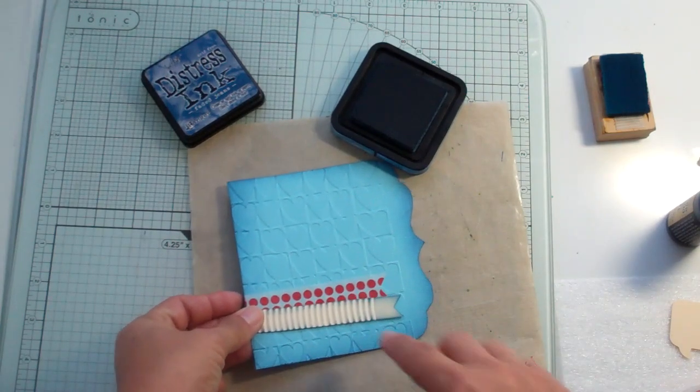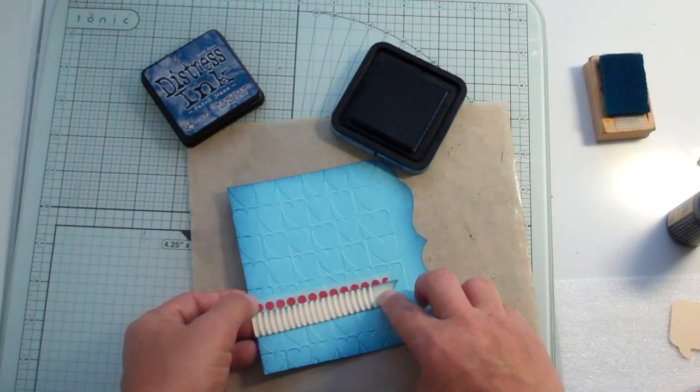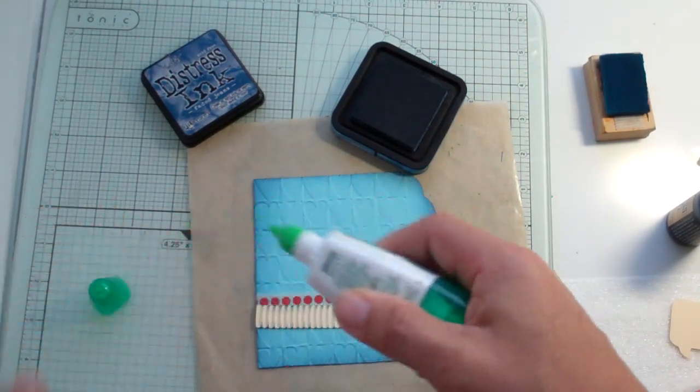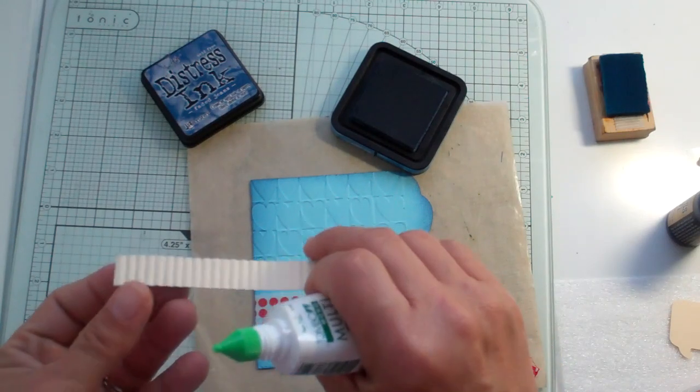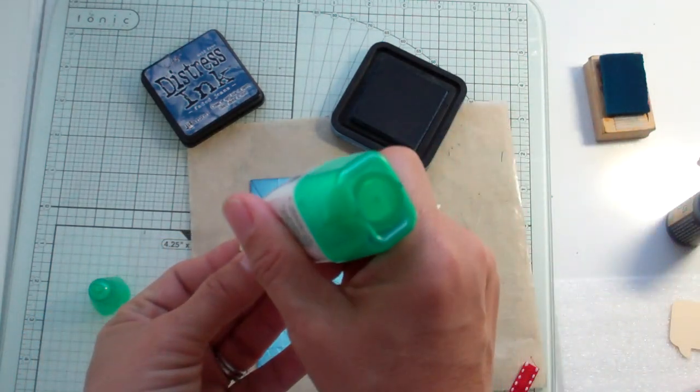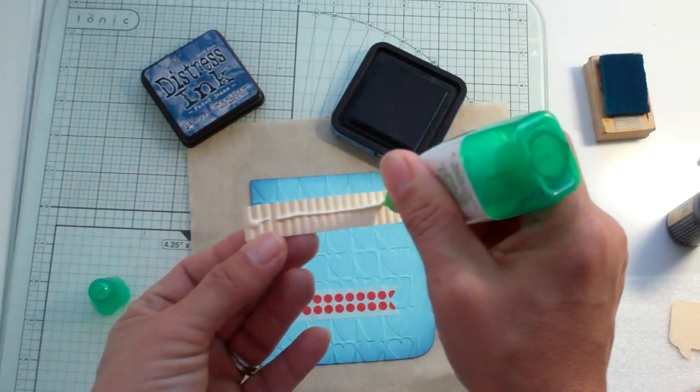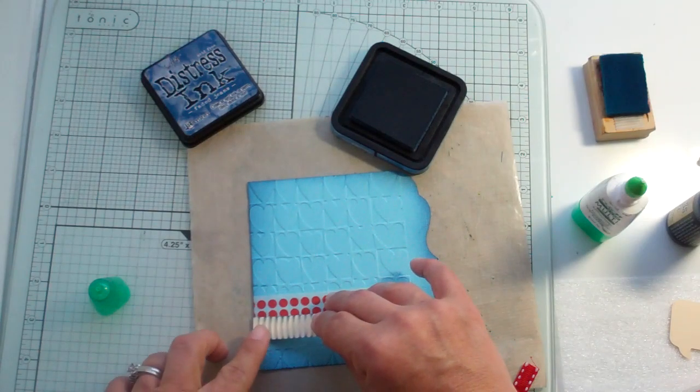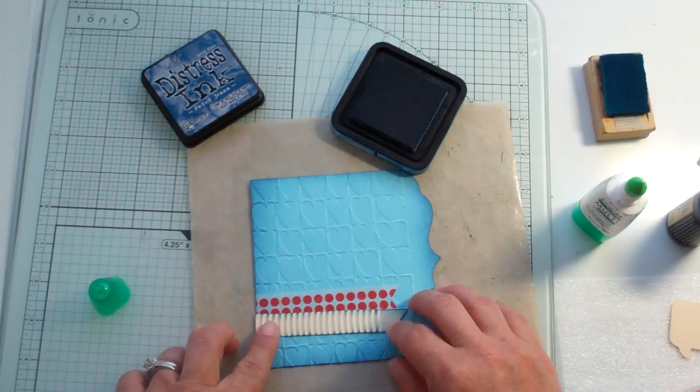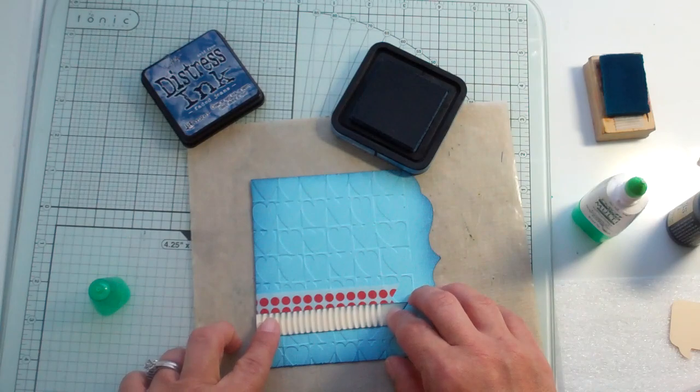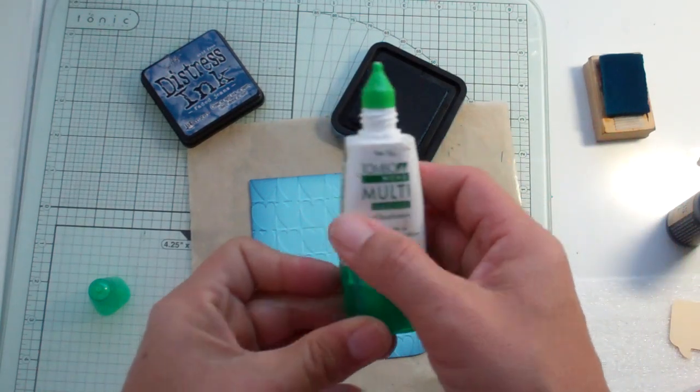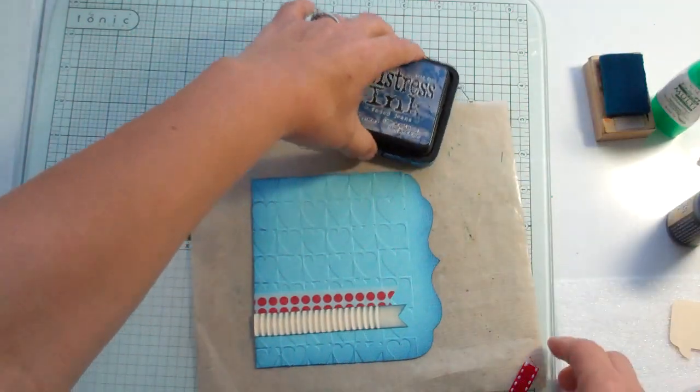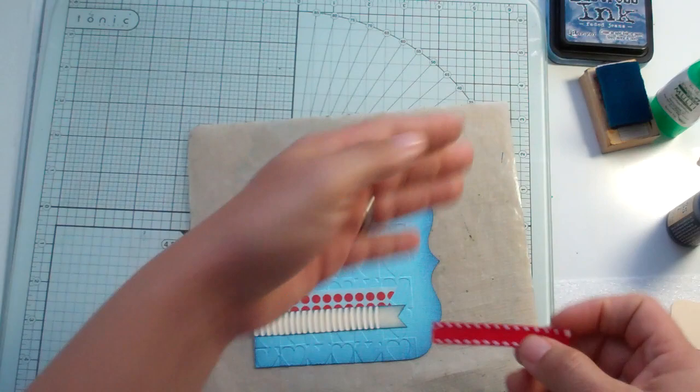Now, to adhere this piece, I'm going to use liquid glue, because if I don't, when I put the ATG on that, it's going to smush the crimps down. So, I'm just going to use my Tombow Multi Liquid Glue. I like it very much, because of the tip there. It doesn't blob out as much for me as the other.